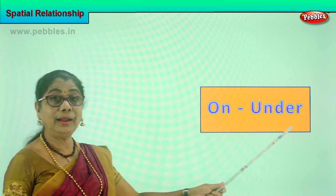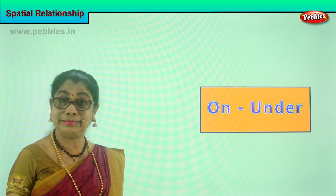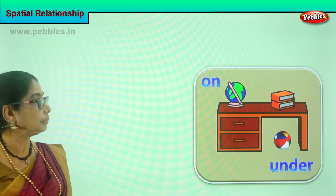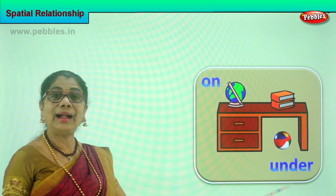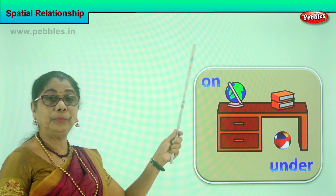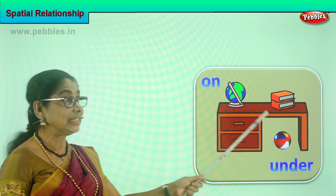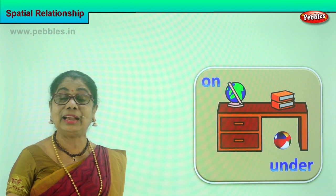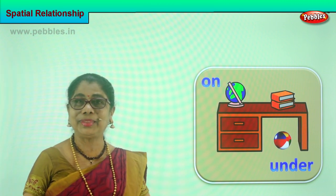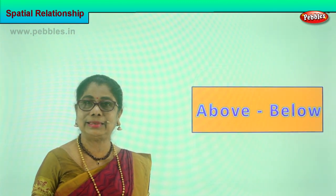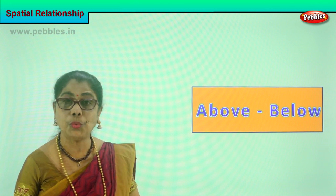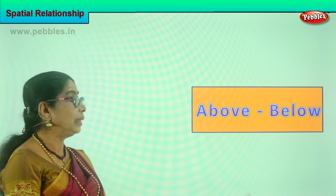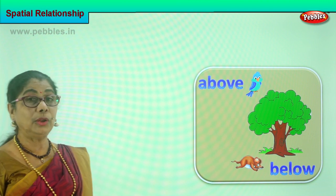Next: on, under. What's the next one? On, under. Let's look at the picture. Where is the globe? It's on the table — on. Where is the ball? Under the table. On the table, under the table. The relationship between the item on the table and the item under the table — on, under. The ball is under the table. The globe is placed on the table.